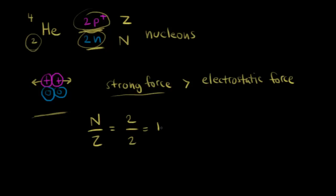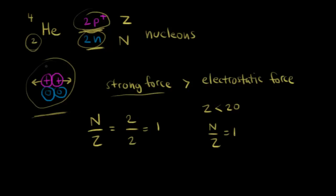It turns out that nuclei with small numbers of protons — specifically Z less than 20 — have stable nuclei when the N to Z ratio is equal to one. When N over Z equals one, you have a stable nucleus, meaning equal numbers of protons and neutrons. So the helium-4 nucleus is stable.